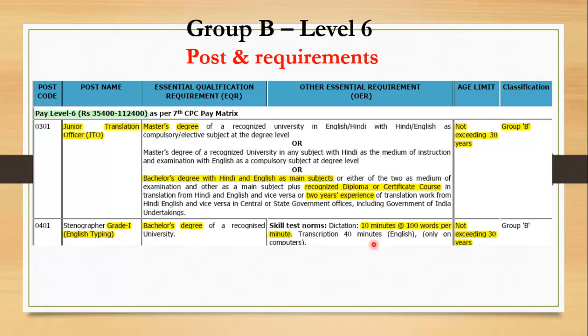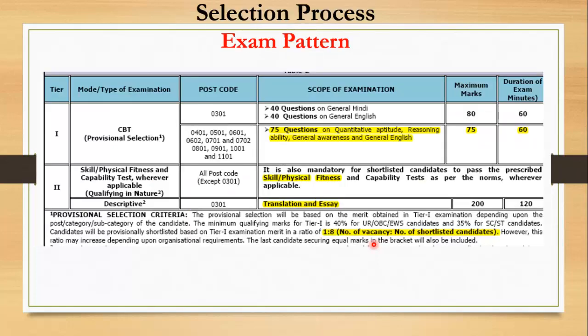If you meet the essential qualification requirements, I recommend you apply for this job. In the selection process, there will be a written exam on the computer — a Computer Based Test (CBT). For post code 0301, Junior Translation Officer, there are 40 questions in English and 40 questions in Hindi, totaling 80 marks, with a duration of one hour.